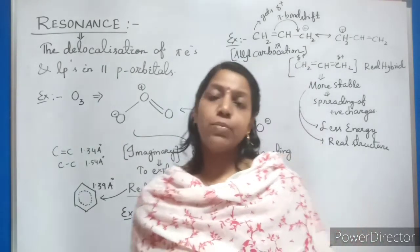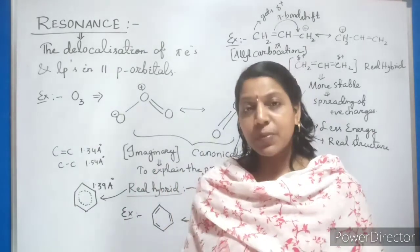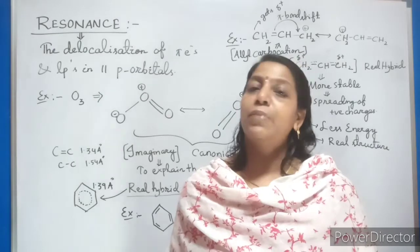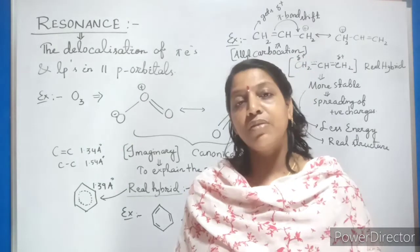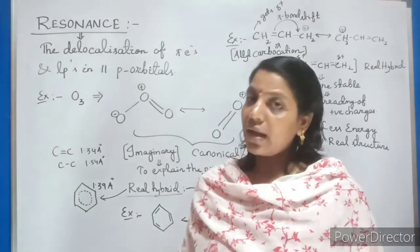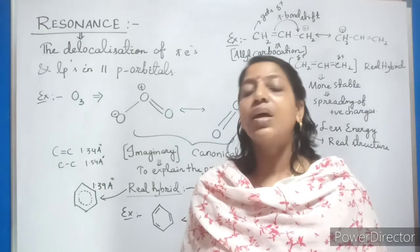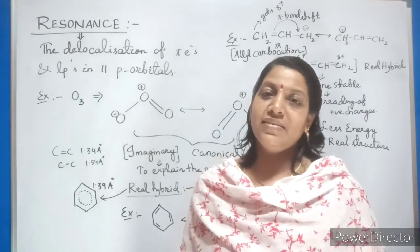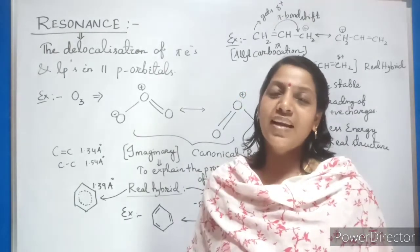Resonance structure is nothing but it is in which there will be delocalization of the electrons. Which type of electrons? Pi bond electrons and lone pair electrons. What is the purpose? Just to explain the properties and these are all nothing but called as imaginary structures or canonical structures or resonant structures. But what about real hybrid? It is nothing but the real structure. But in that we are not able to explain it.